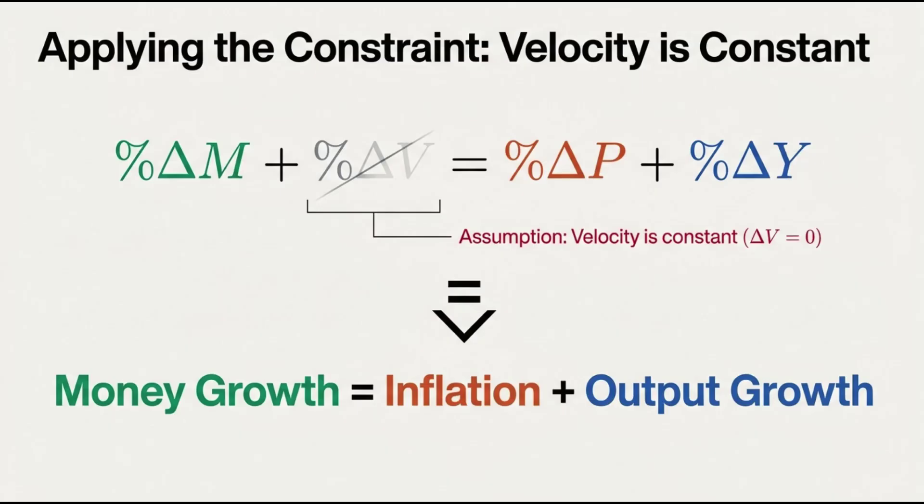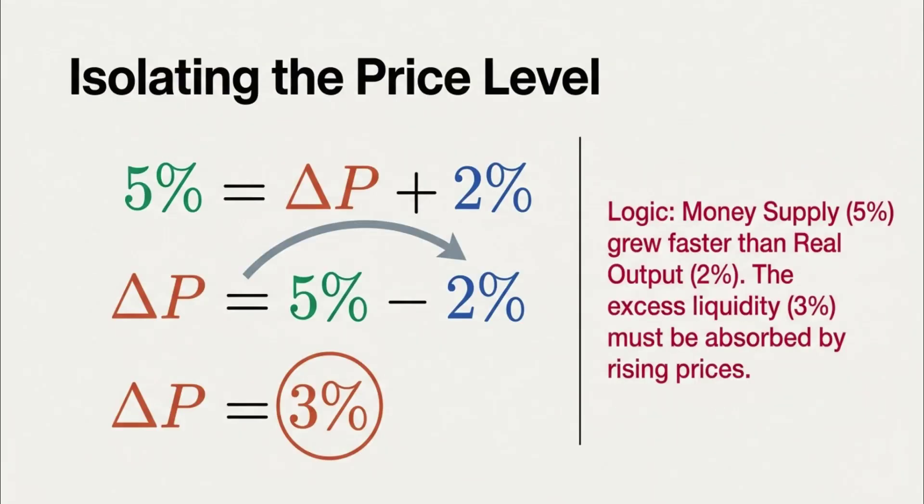If the velocity is constant, what's its rate of change? Well, it's zero, right? So our delta V is 0%. And just like that, we have all the clues we need to solve this thing.